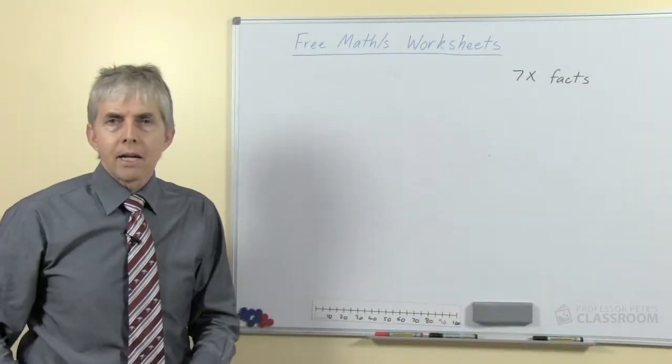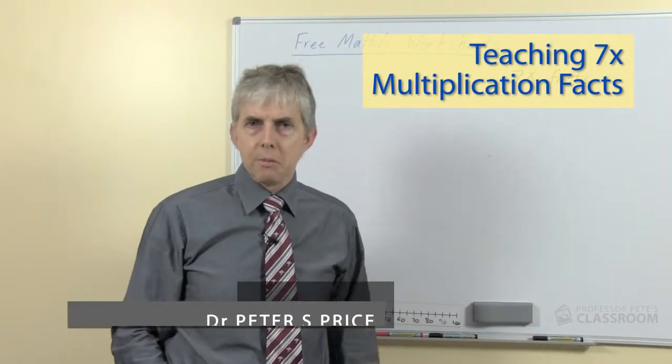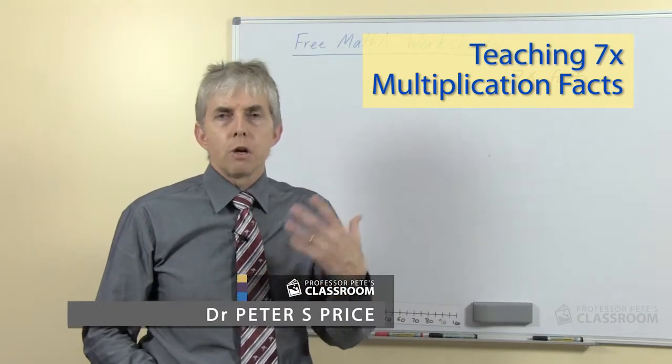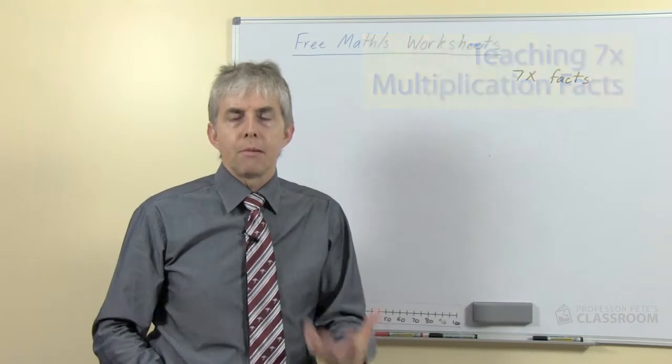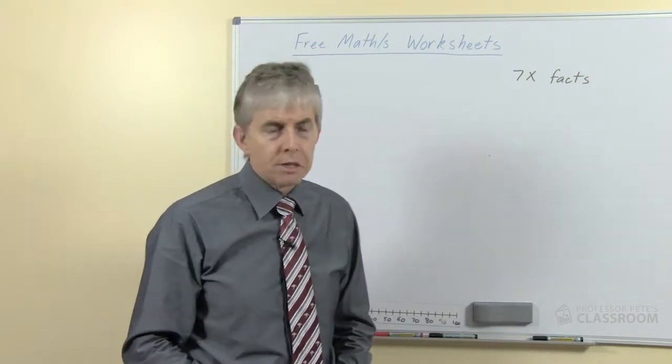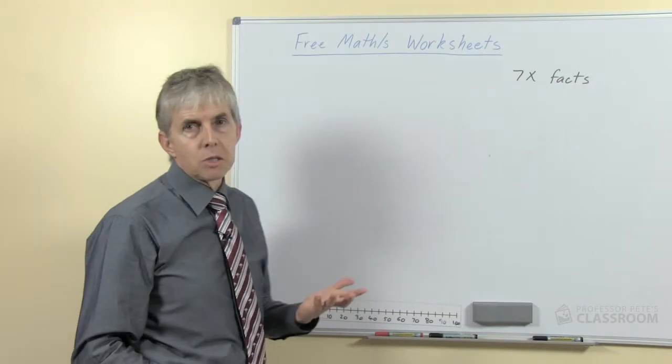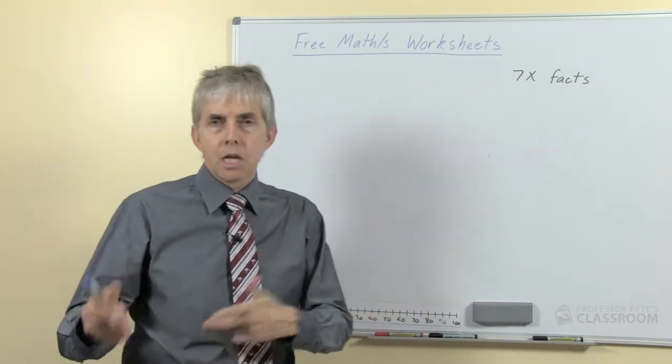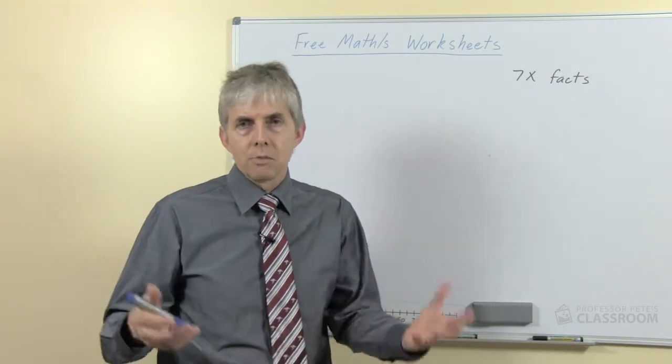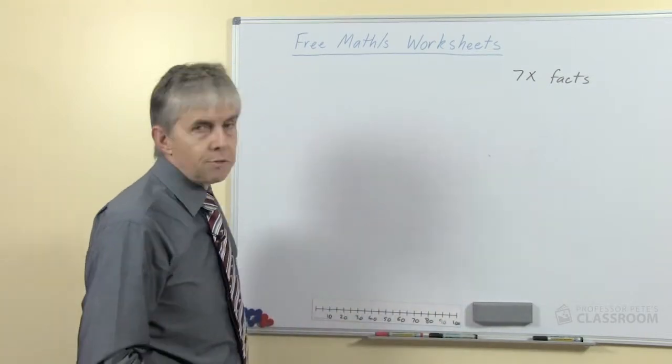How can we approach this and what's the strategy? Because as you'd be aware if you've watched my other videos, we adopt a strategies approach. We recommend that for teaching all of the number facts for all four operations and specifically for multiplication, we've got the doubles, we've got the double-doubles, we've got place value based strategies for the ten times and five times. What do we do for sevens?